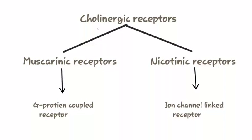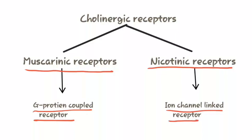Cholinergic receptors can be classified into two types. First is muscarinic receptor and second is nicotinic receptors. Muscarinic receptors are G protein coupled receptors and nicotinic receptors are ion channel linked receptors.